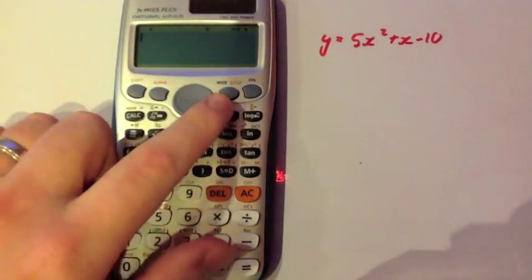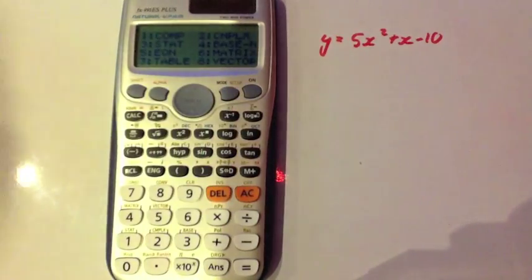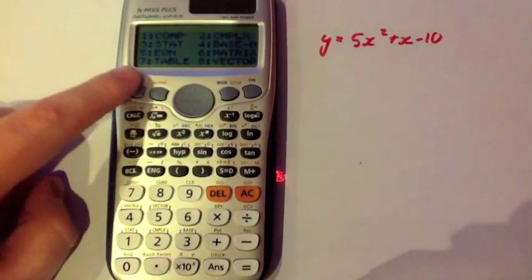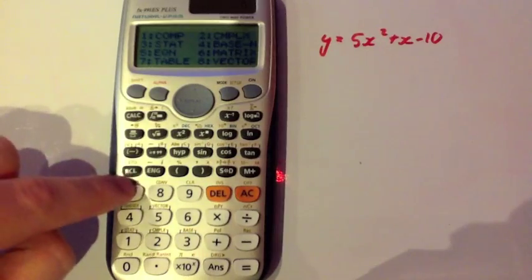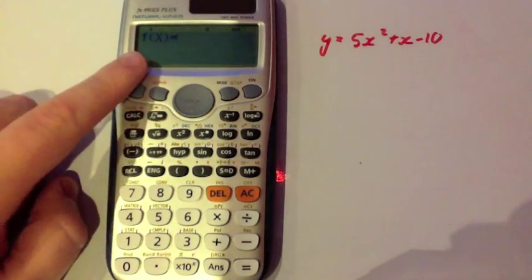So what we're going to do is we're going to press the mode button. And you can see we've got our different modes here. We're going to press number 7. Number 7 is a table. So press number 7 and it will ask you what your function is.